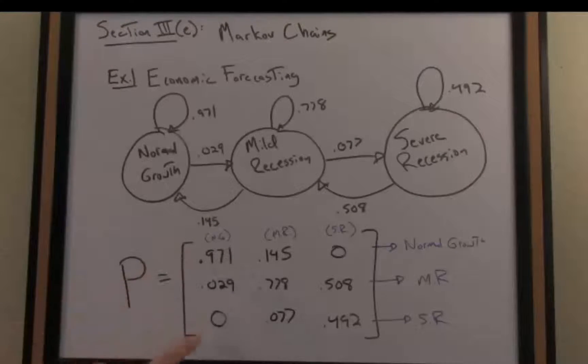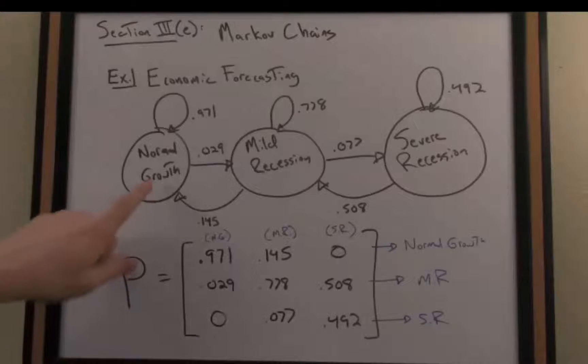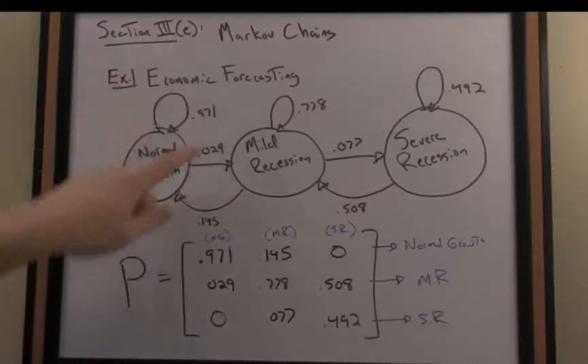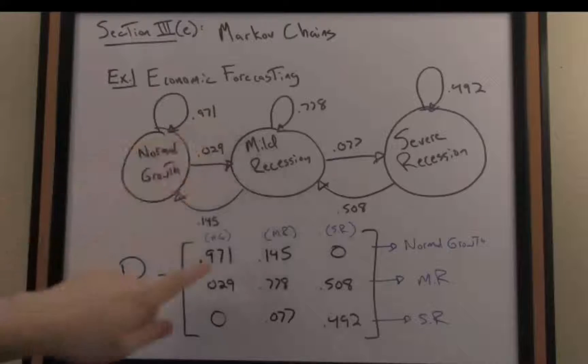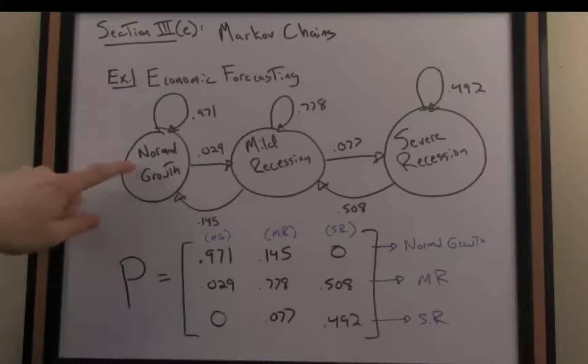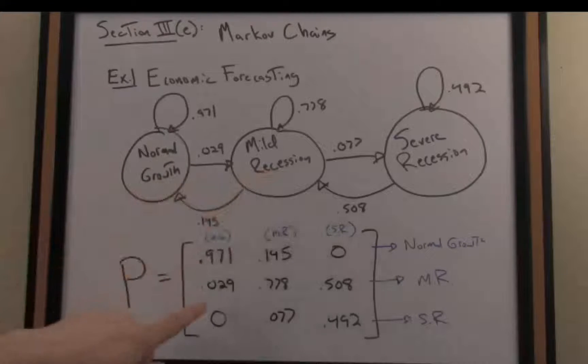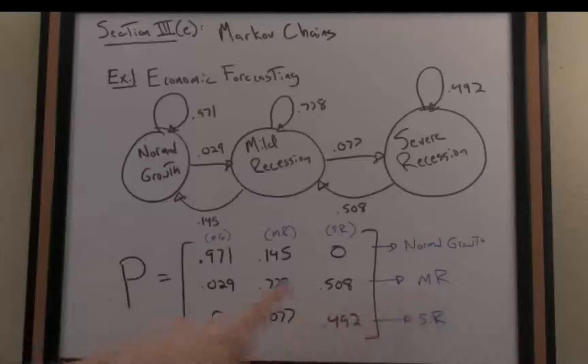So for the numbers in column one we can think of interpreting them as transitional probabilities for our economy if we are currently in a natural growth state. So the probability when we're in natural growth to maintain natural growth is 0.971 and we see that number here. On the other hand the transitional probability from natural growth to mild recession, natural growth in this column mild recession in the second row, that probability is 0.029.